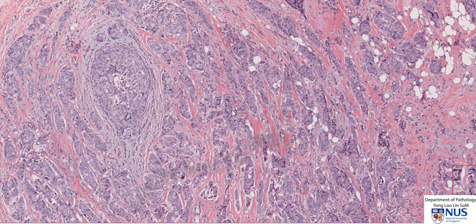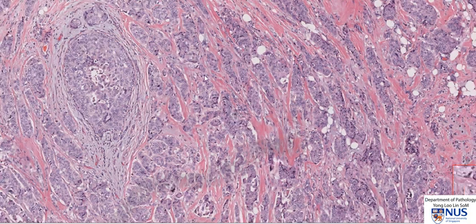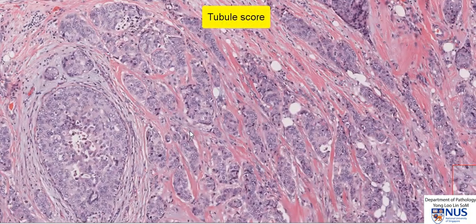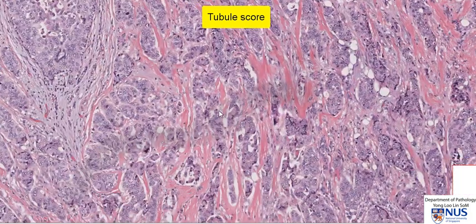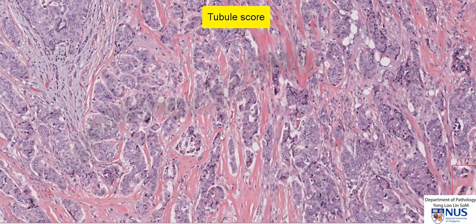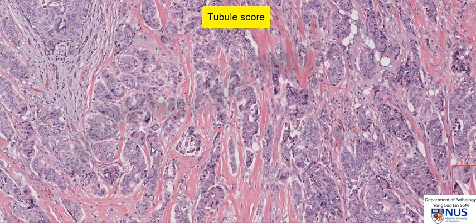Let's look at the tubule score first. There is actually some tubule formation — we can see small lumina in some of the cell nests. At the same time, there are some more solid-looking areas. So there's a combination of tubule-forming areas as well as more solid nests, which gives this a tubule score of 2.